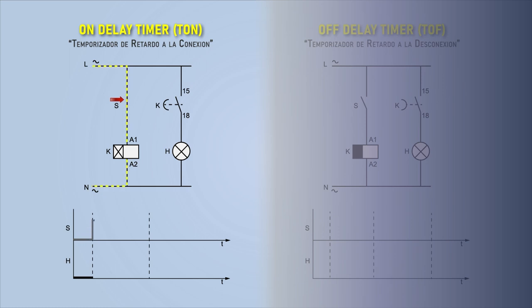If we close the S contact to energize the K coil, then the connection delay time begins to time. When this time is up, the auxiliary contact K switches and closes to allow current to pass and energize the indicator H.